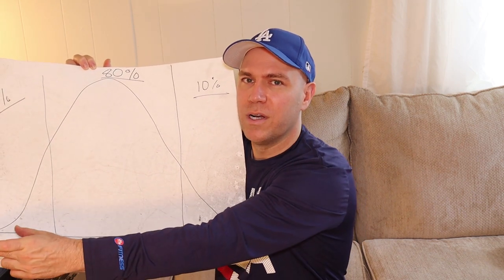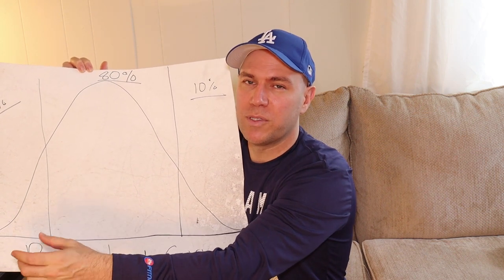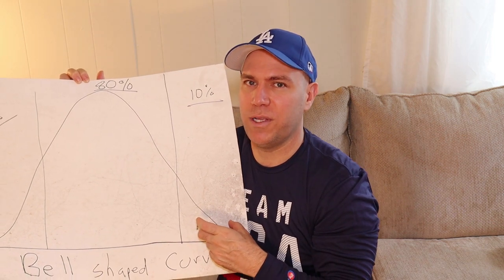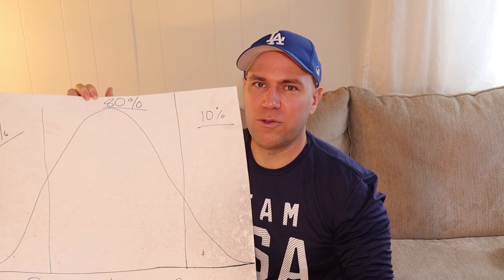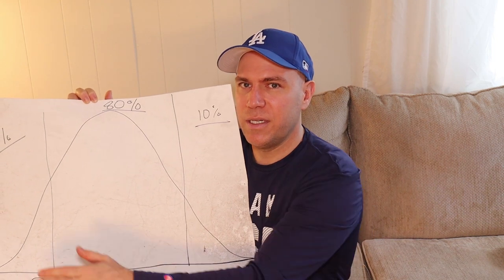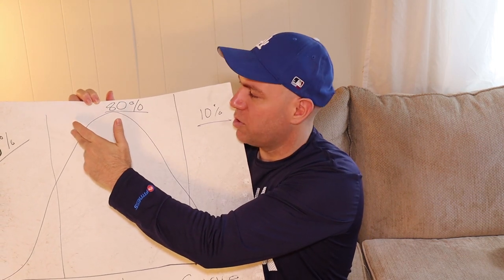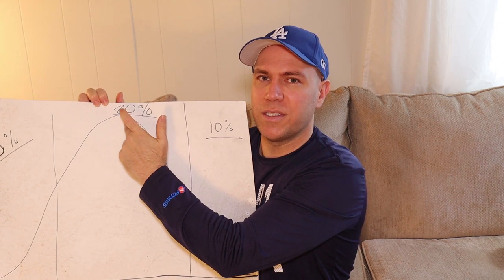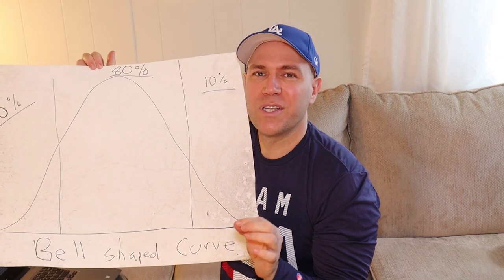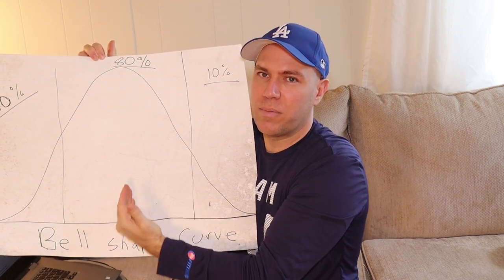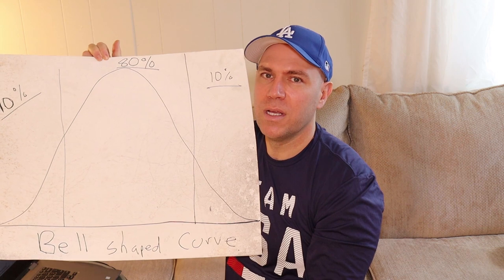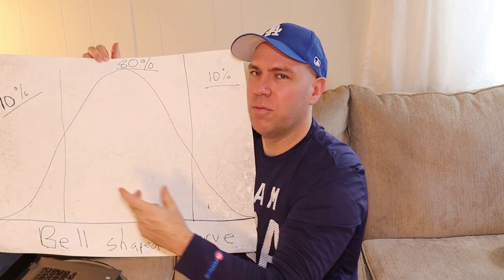This bell-shaped curve applies to most things in life and is fairly accurate in how success breaks down. You have your super-rich people around 1%, wealthy people around 10%, regular people about 80%, and poor people around 10% — the extreme poverty range. This varies country to country. In the United States, the middle class sits right at the crest of the bell, representing about 50% of people.